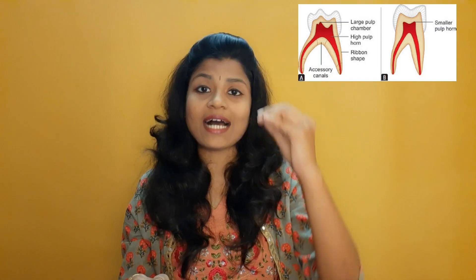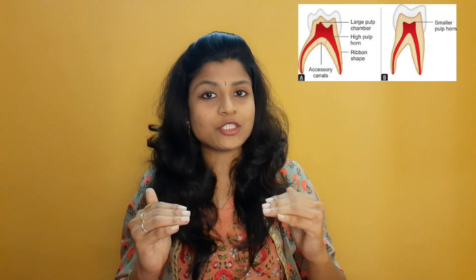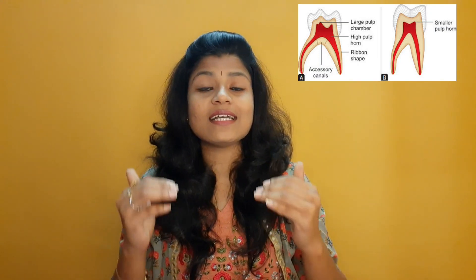The next criteria is pulp. The primary tooth has a larger pulp chamber compared to the permanent tooth. In primary teeth, the pulp horns are at a higher level, especially on the mesial surface. In permanent teeth, the pulp horns are relatively shorter from the outer enamel surface.